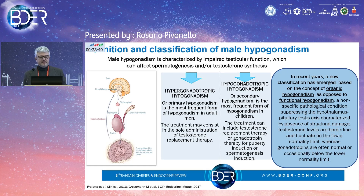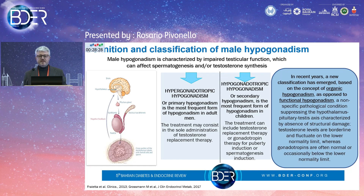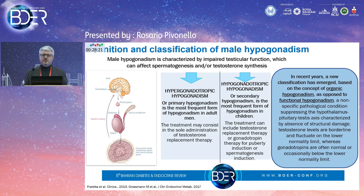We can have two different types of hypogonadism depending on the site of damage. If the site of damage is the testis, we have primary hypogonadism, characterized by increased gonadotropins. If the damage is at the level of the hypothalamus-pituitary region, we have secondary hypogonadism with low gonadotropins. In recent years, a new classification has emerged based on the concept of organic hypogonadism as opposed to functional hypogonadism.